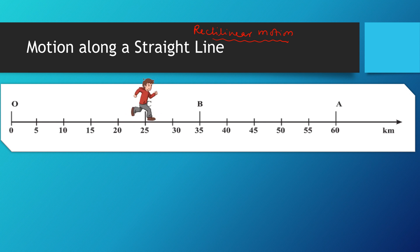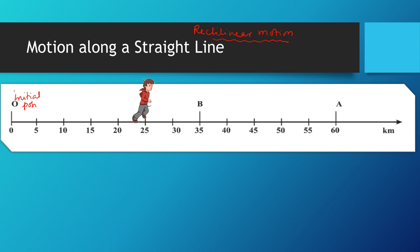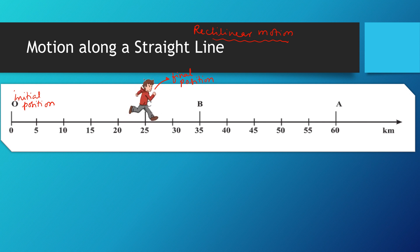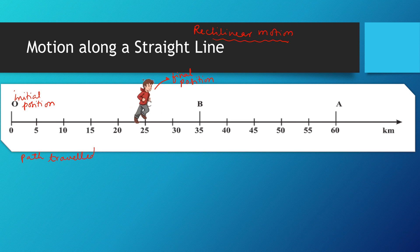Now the question is: how much has the boy moved? What is distance? The boy has started his journey from O — so this is going to be the initial position — and we are going to talk about the final position, which is C. The boy has started from O, gone to A, and then returned to C. The total path traveled can be written as O to A, then from A to C — that is OA plus AC.